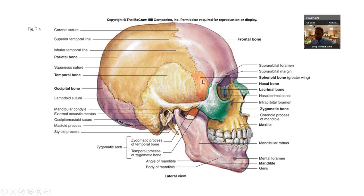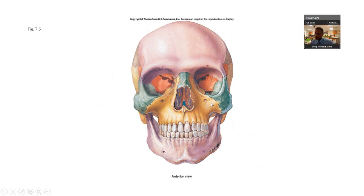They color-coded it, so you can see the sphenoid runs all the way across. There's a big superior orbital fissure right here. Going back to what I said on the last slide: nasal, maxillary, lacrimal — and the sphenoid is in the back wall. In between that is the ethmoid bone.